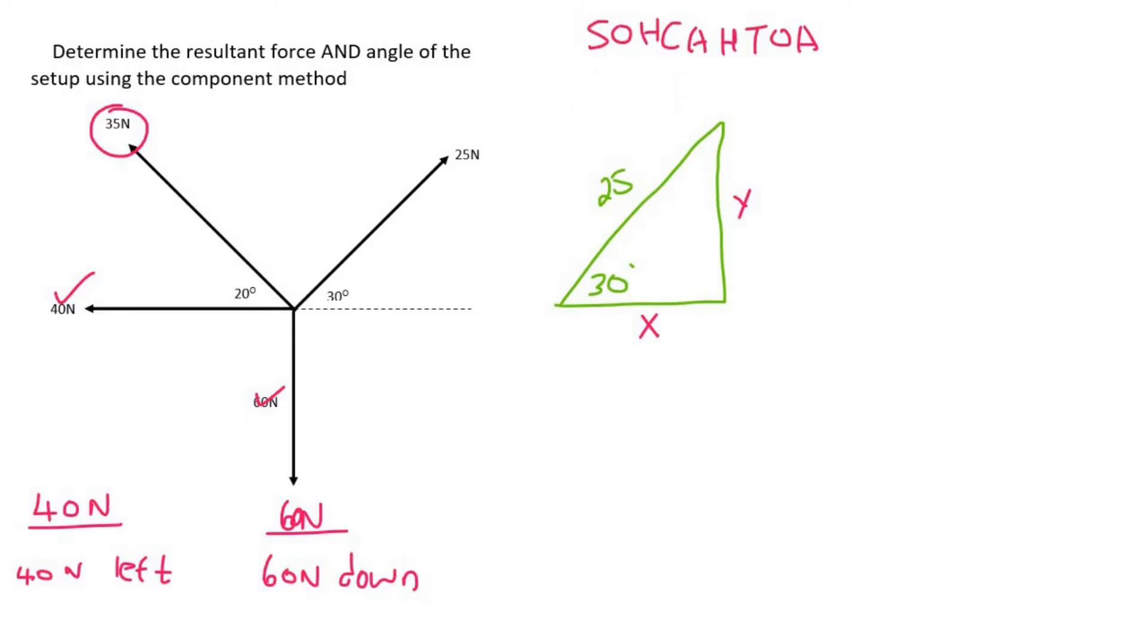If we look at the 30 degrees and we look at the x, that's the adjacent, and we have the hypotenuse, so that would be cos. So what you would say is cos 30 is equal to the adjacent over the hypotenuse. Then you could get x alone by multiplying the 25 across. It'll become 25 cos 30, and so x would be equal to 21.65 Newtons. Now this arrow is going more to the right, so I'm going to say right.